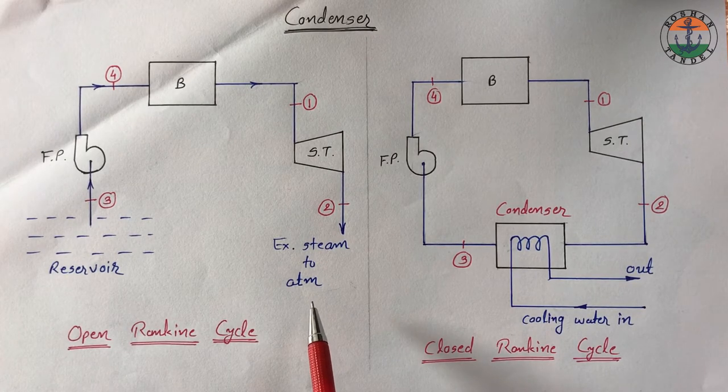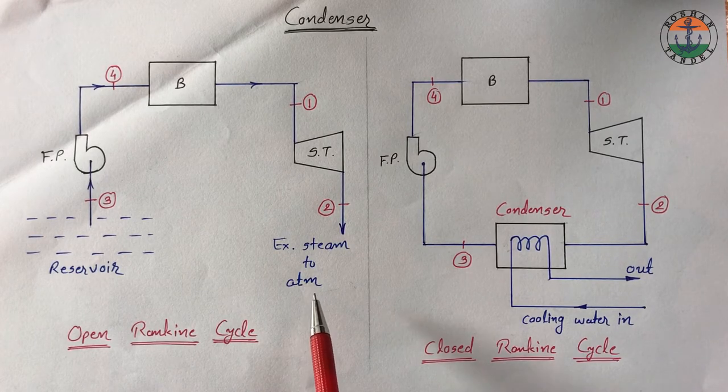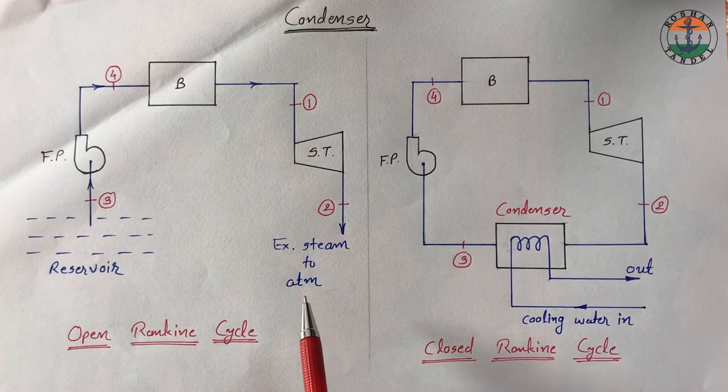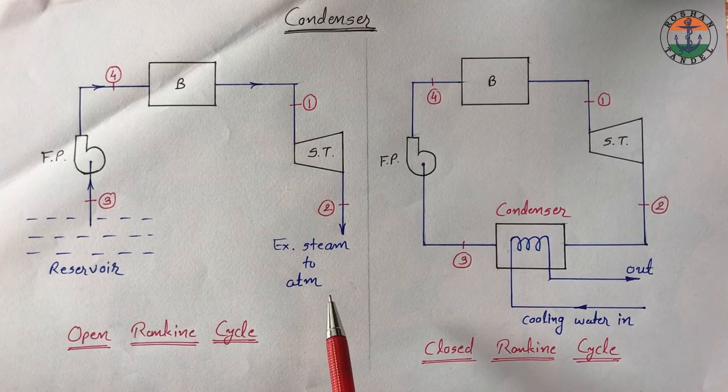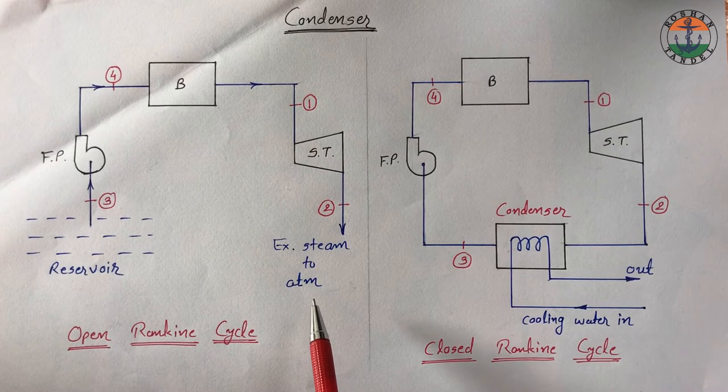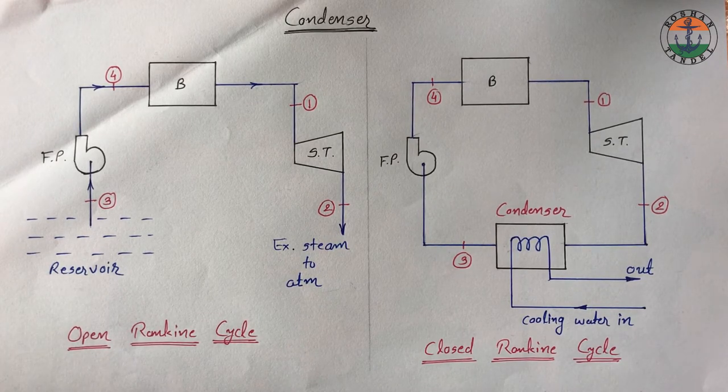At atmospheric pressure, saturation temperature is 100 degree Celsius. In this condition, so much amount of heat goes to the atmosphere which is a waste of energy. And as a result we get less work output from the steam turbine.